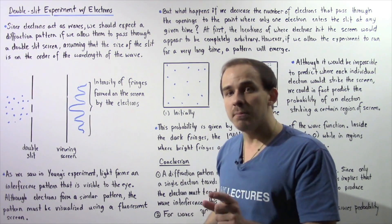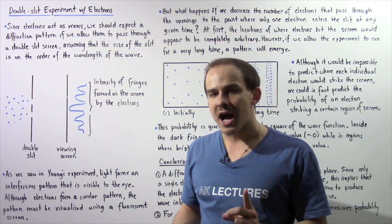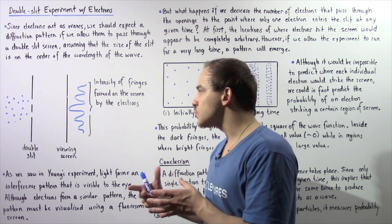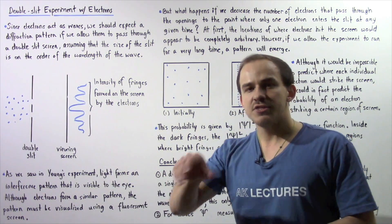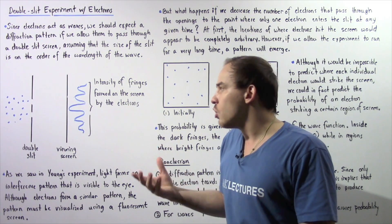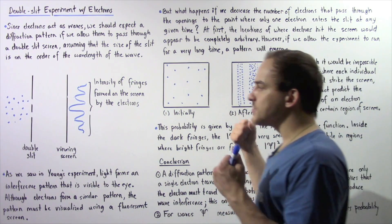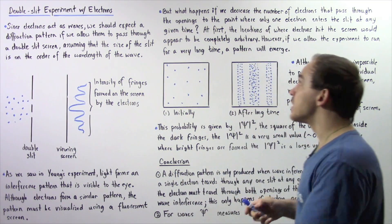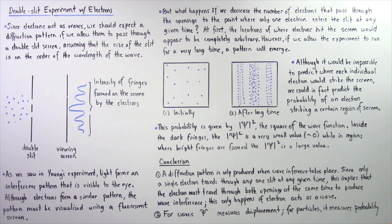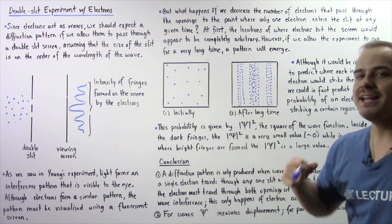As we saw in the double-slit experiment conducted by Young, light forms an interference pattern that can be visualized by the eye. Although electrons form a similar pattern, to visualize the fringes formed by electrons we have to use a fluorescent screen — any time an electron strikes that fluorescent screen, the location where it strikes glows. In this particular experiment, we had many electrons passing through the two openings at any given time.